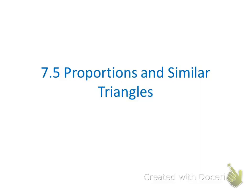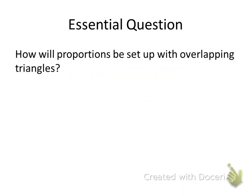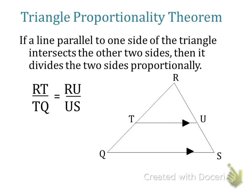Today's lesson is about 7.5 proportions in similar triangles. The essential question of the day is: how will proportions be set up with overlapping triangles? All examples deal with overlapping triangles, and we need to understand how to set up a proportion with that.